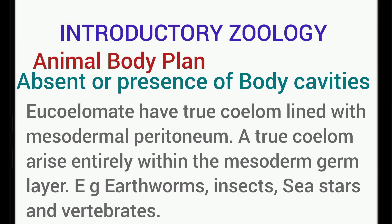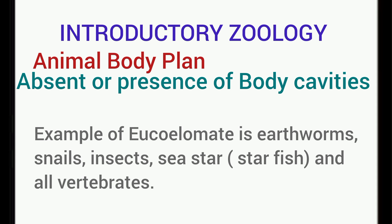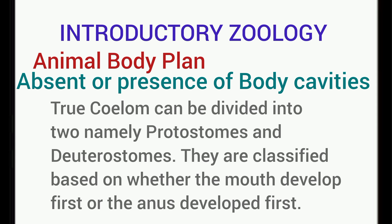Eucoelomates are animals with a true body cavity. Their body cavity is lined with mesodermic peritoneum and is derived only from the mesoderm. Examples of eucoelomates include the earthworms, insects, sea stars, and all vertebrates. Eucoelomates can further be divided into two groups — protostome and deuterostome — based on whether the mouth develops first or the anus develops first during development. In the protostome, the mouth develops first, while in the deuterostome, the anus develops first.